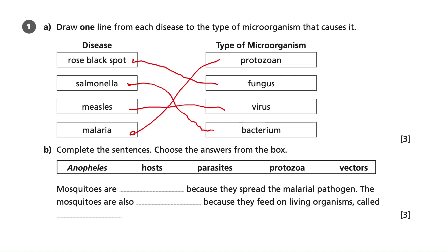Part B is a complete the sentence question and we're choosing answers from the box. There are more words in the box than there are spaces, so we can't use process of elimination — we've got to actually think about what is the best word for each particular space.